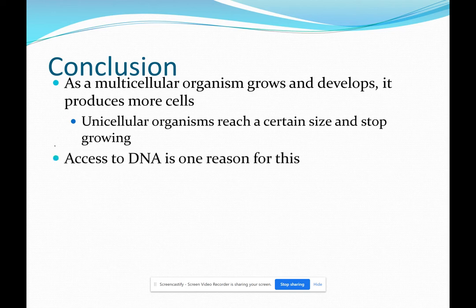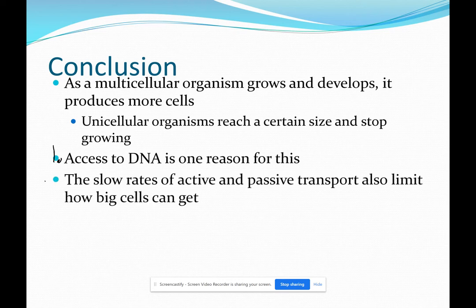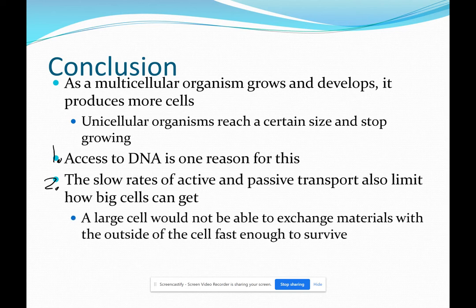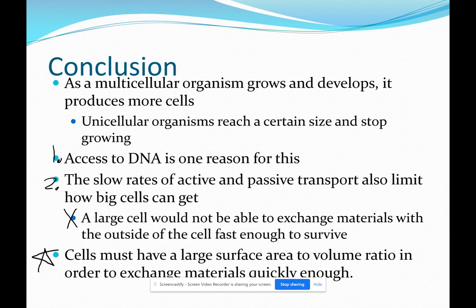One reason was access to DNA. We talked about that. The second reason is that active and passive transport are slow. And that's going to limit how big your cells can get. And then we already said this statement. You guys don't really need any of this stuff because you wrote all this down. And I do need to write down this bottom one. And this can go right underneath where you left off on the previous slide. Cells must have what we call a large surface area to volume ratio in order to exchange materials quickly enough. And we're going to look at what that means on the next slide.